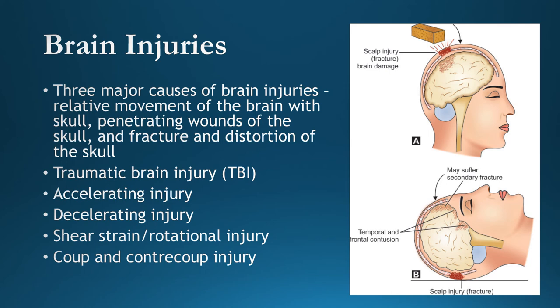Shear strain rotational injury is due to side-to-side rotational movement of the head, causing the brain to jolt; sharp edges of the tentorial attachment and bone buttresses at the base of the skull injure the brain. Coup injury means injury to the skull and brain occurs at the site of impact — common with blunt force blows. Contrecoup injury means injury to the skull and brain occurs on the opposite side of impact; frontal lobe damage is generally seen, often producing spectacle hematoma.